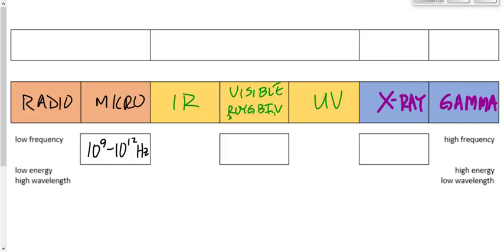X-rays, yesterday, I think I told you the wrong number for X-rays. I think I said 10^17 to 10^19 yesterday. It's 10^17 to 10^20 hertz. So if you're given a frequency that's 10^18, it's going to be X-rays.